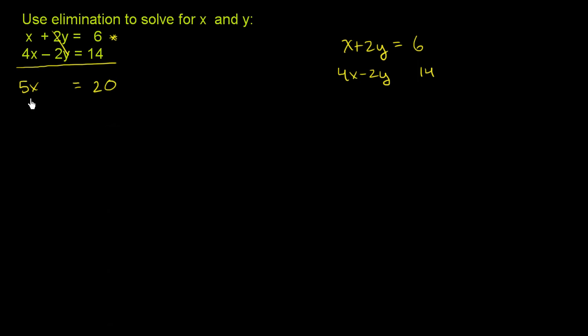So we're left with one equation with one unknown. 5x is equal to 20. We can divide both sides by 5. And we are left with x is equal to 4.